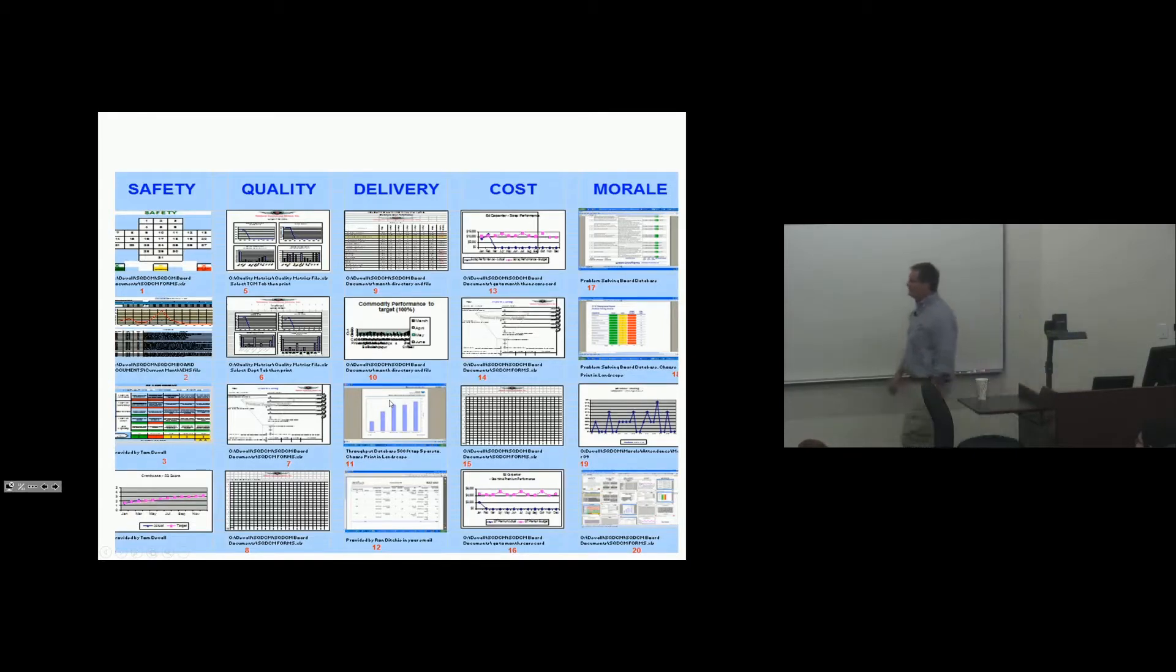And this was a board at Continental. Safety, quality, delivery, cost, morale. Notice that in every position. You see the number? One, five, nine, ten. It's a map. It's a map that tells them this is the document that goes in this position on the 10 boards in the manufacturing area.